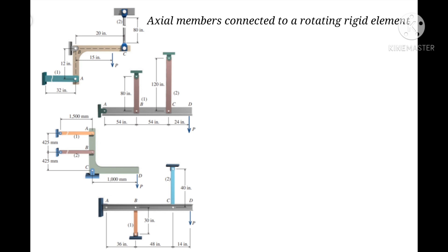If both members elongate or both members contract as the rigid bar rotates, we use the similar triangles equation: delta 1 divided by a equals delta 2 divided by b.